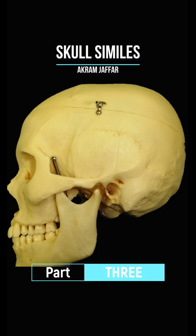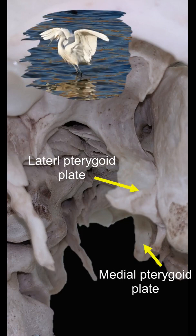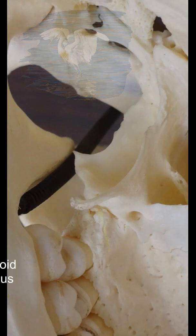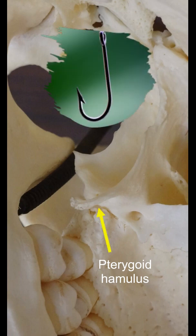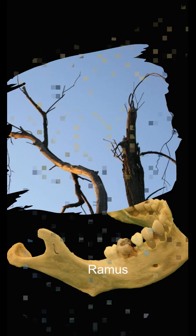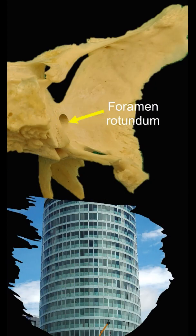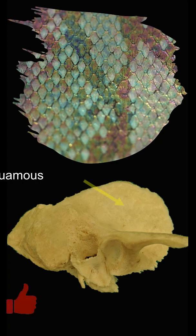Similes are used to describe the shape of many bony features in the skull, such as the pterygoid plates of the sphenoid bone — the medial and lateral pterygoid plates — for looking like wings, the pterygoid hamulus of the medial pterygoid plate for looking like a small hook, the ramus of the mandible for looking like a branch, the foramen rotundum within the sphenoid bone for its rounded shape, and the squamous part of the temporal bone for being flat and looking like a scale.